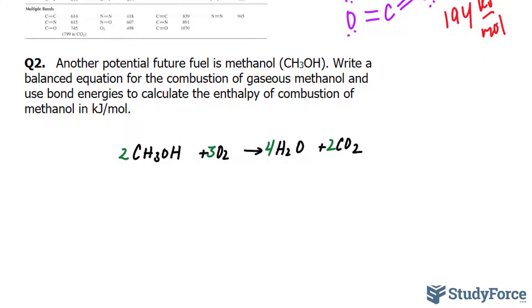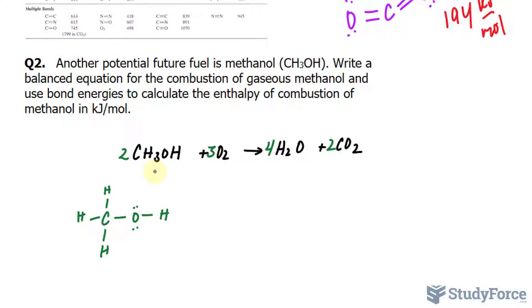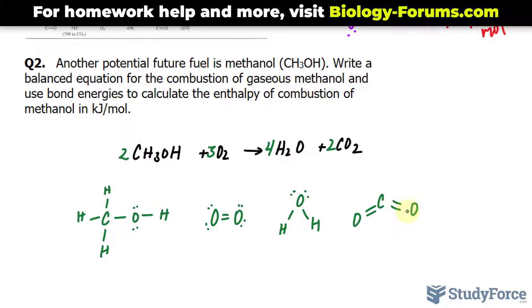Now that that's done, you want to write Lewis structures for each of these molecules. Starting with methanol, we have C bonded to the hydrogen atoms, that's bonded to oxygen, and oxygen is bonded to hydrogen. That takes care of this. Oxygen molecule is diatomic, that means we have two oxygens that are double bonded. This molecule is simple, O and two hydrogens. And the Lewis structure for this is carbon in the middle, and it's connected, double bonded, to two oxygen atoms.